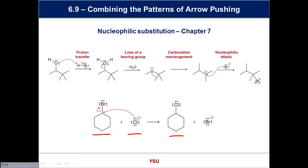A different pathway — concerted in one step. I have a delta-positive carbon needing help and Cl⁻, which is electron-rich and therefore a nucleophile. It goes in. Why do I need two arrows? I'd be breaking the octet rule with only one. So: nucleophilic attack is one type of arrow, and the leaving group breaking off is the other.